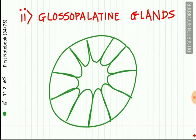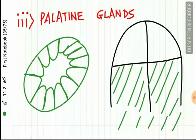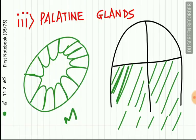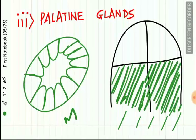The glossopalatine gland is a pure mucus gland, present in the glossopalatine fold. The palatine glands are also pure mucus glands, present on the posterolateral area of the hard palate, as well as on the soft palate and uvula.